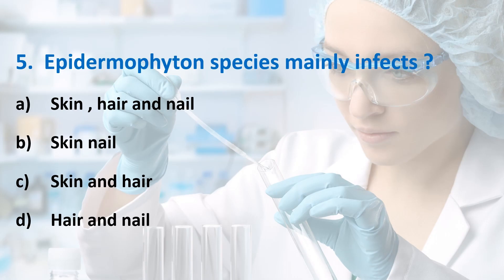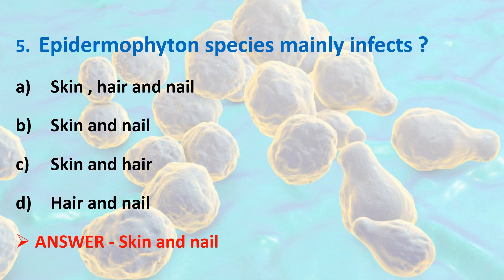Fifth question: Epidermophyton species mainly infects? Options: Skin, Hair and Nail; Skin and Nail; Skin and Hair; Hair and Nail. Answer is Option B, Skin and Nail. Epidermophyton is a dermatophyte which causes infection on skin and nail. Trichophyton infects skin, hair and nail; Microsporum infects skin and hair. Dermatophytes cause ringworm infection or tinea, the commonest superficial mycoses infecting keratinized tissues.